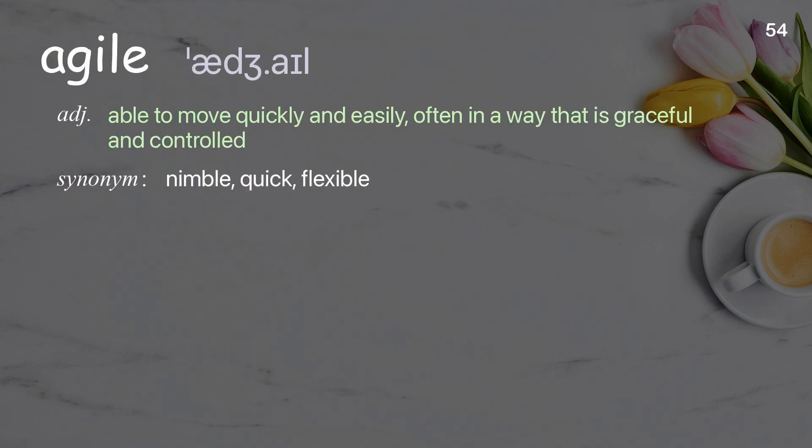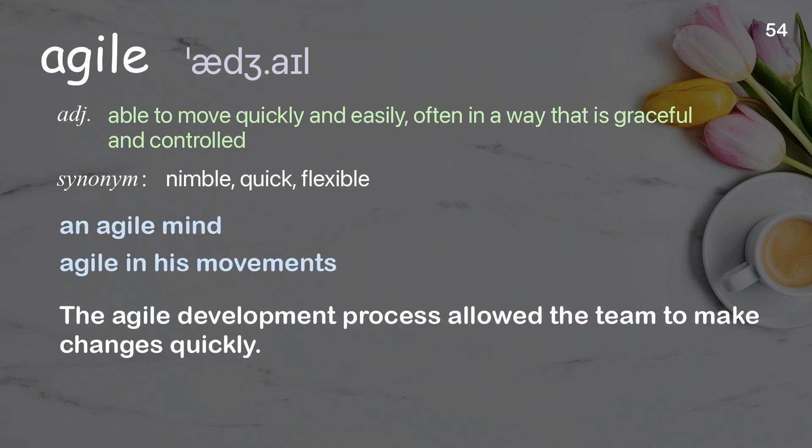Agile: Able to move quickly and easily, often in a way that is graceful and controlled. Examples: An agile mind. Agile in his movements. The agile development process allowed the team to make changes quickly.